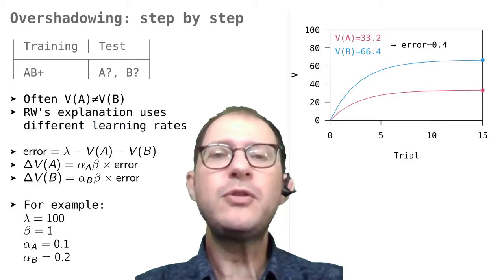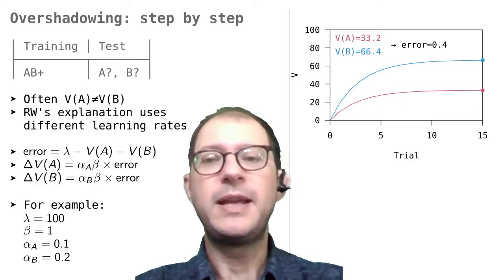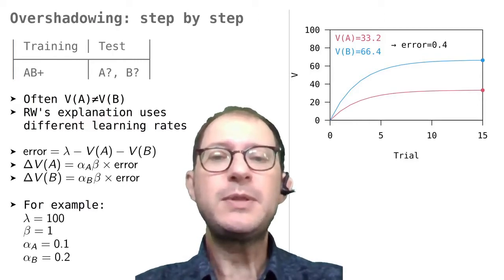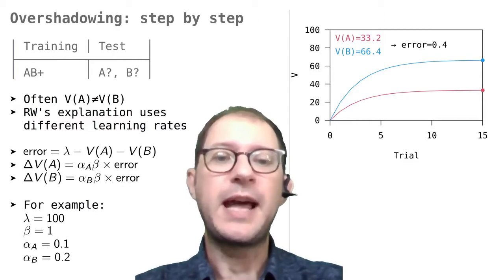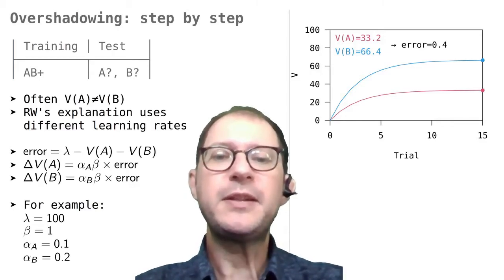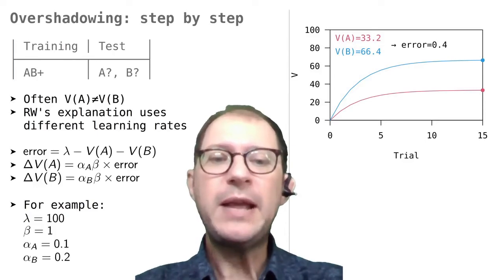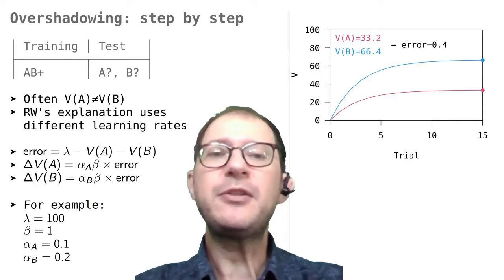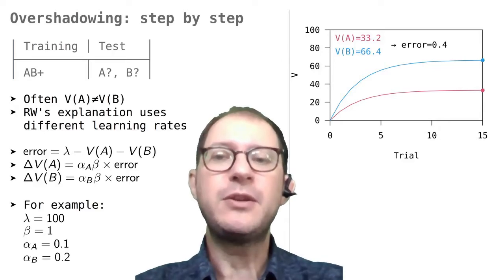In conclusion, what you get from RW extended to two stimuli is exactly what you see in an overshadowing experiment, that a stimulus can get more associative strength than another. In summary, RW explains overshadowing with the idea that the two stimuli are working together to reduce the same error, but one stimulus has a higher learning rate than the other, so its own associative strength increases faster.